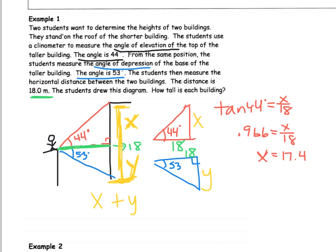Then when I solve the next triangle, I have tangent of 53 degrees equals y over 18. Tangent of 53 is 1.327. And multiply that by 18. And we get 23.9.